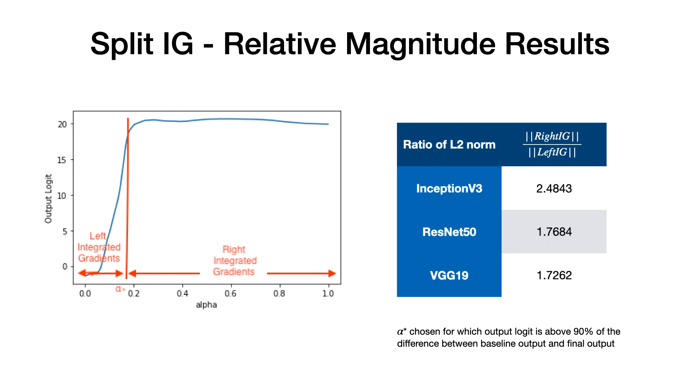To compare the contributions of these two integrals, we look at the ratio of the L2 norms of these two parts of IG, averaged over 2,500 ImageNet evaluation samples. We find that surprisingly, right IG can have a substantially larger magnitude, despite not covering a significant change in output.